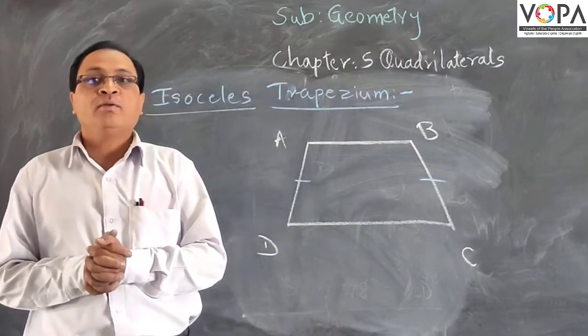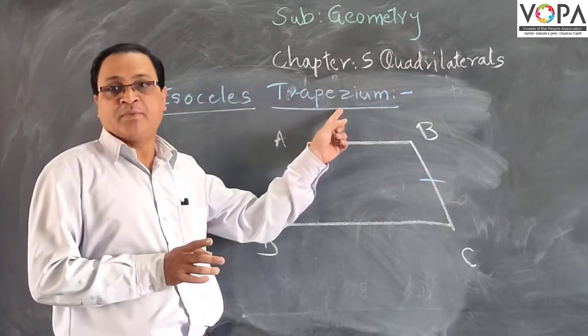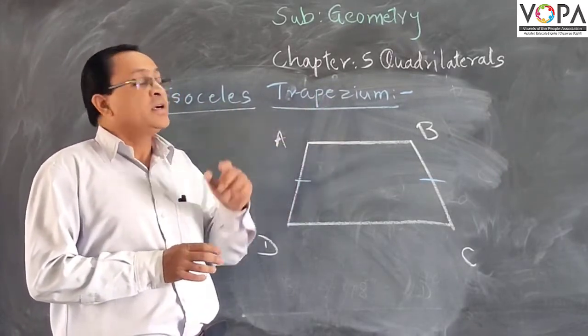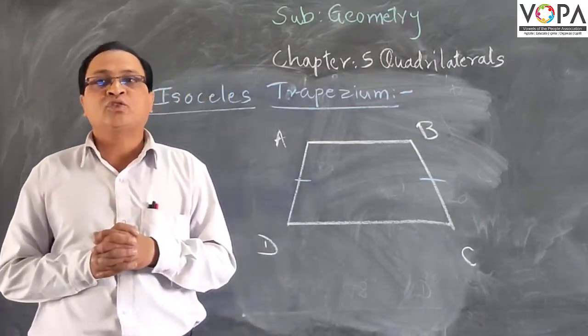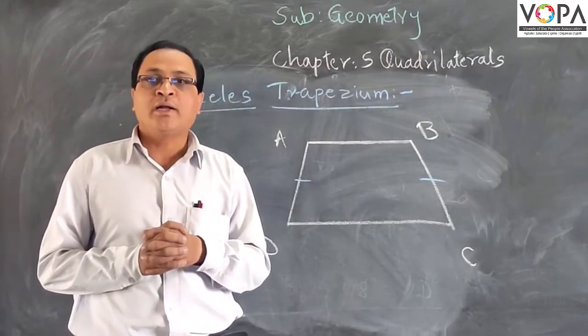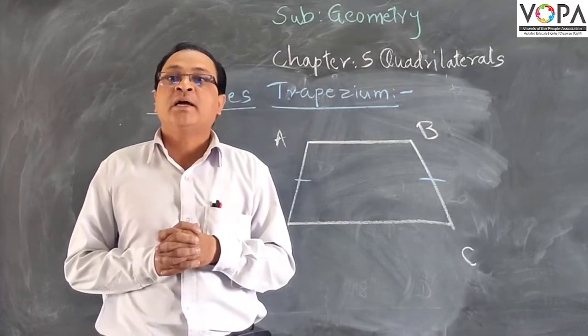Last one, we will see one type of trapezium that is called an isosceles trapezium. Now let us see the definition first. If non-parallel sides of a trapezium are equal, then that quadrilateral is called an isosceles trapezium.